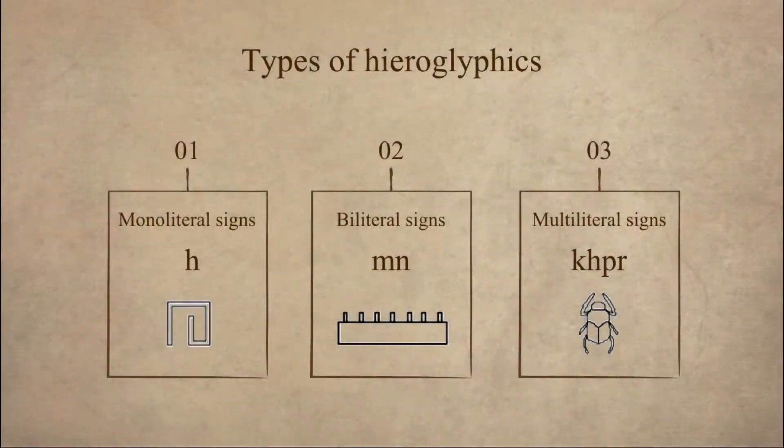What we learned last time was that there are Egyptian alphabets. So basically there are hieroglyphics that can be read as a single sound like the sound M or the sound P. There are other types of hieroglyphics.